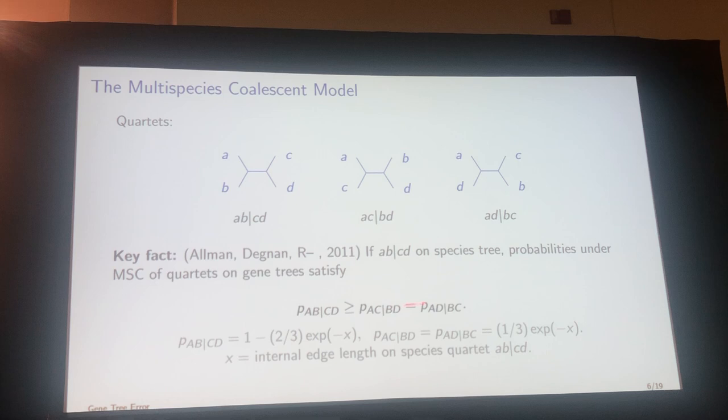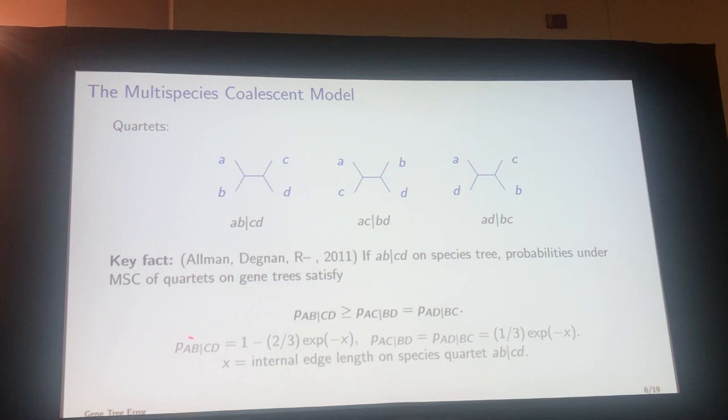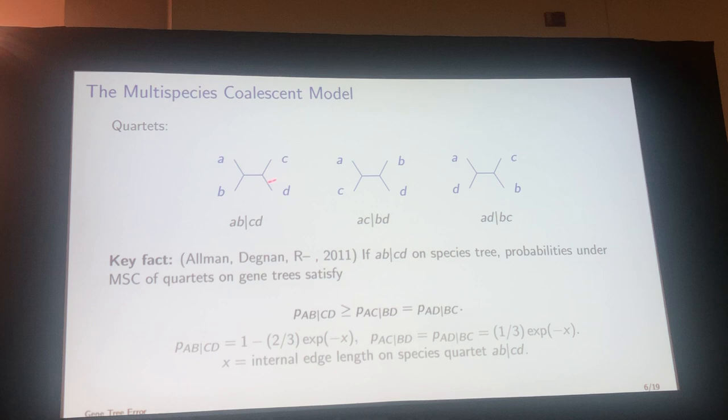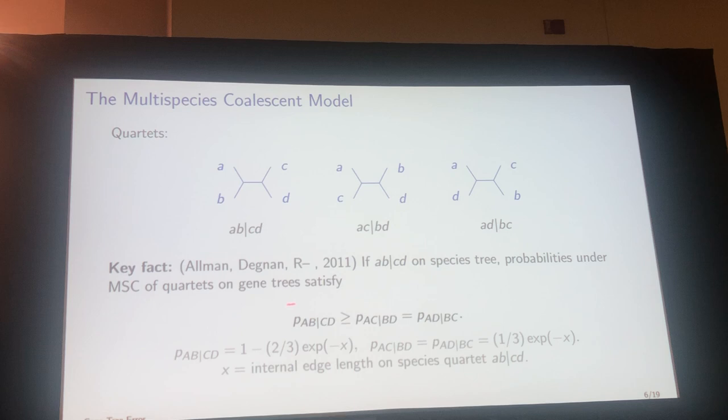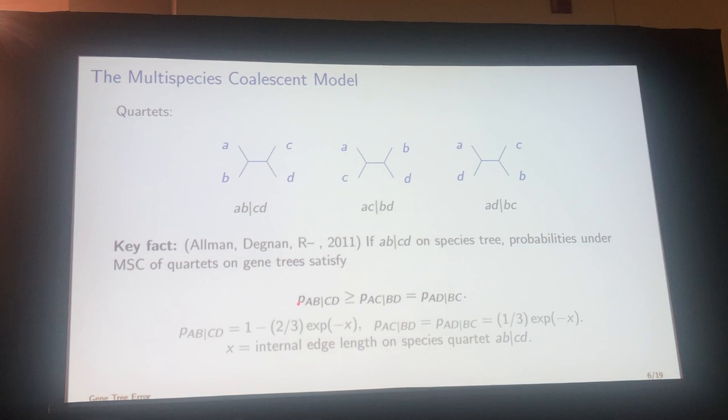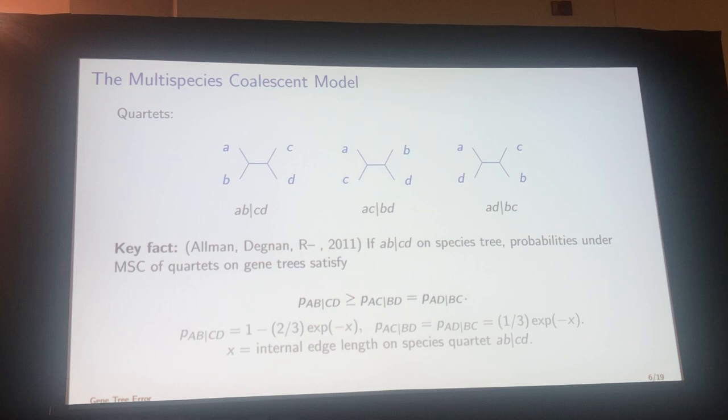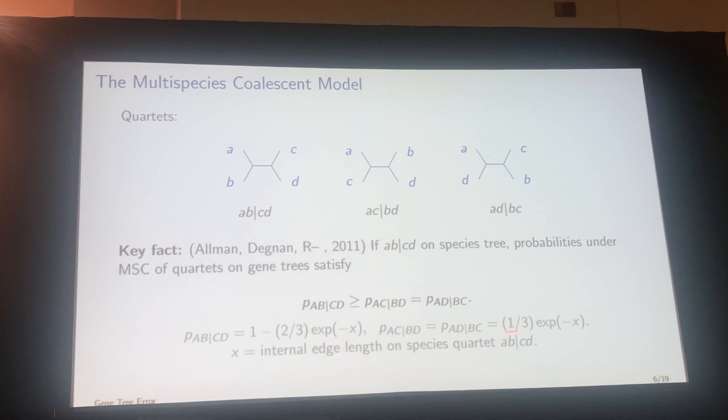Those probabilities depend on the internal edge length of the species tree quartet — that edge length measured in coalescent units — and we can write down exactly what those probabilities are. If the edge length is really long, the matching probability is essentially one, and the gene trees should all match the species tree for that quartet. On the other hand, if the branch length is really short, all three quartet probabilities are going to be about one-third — roughly equal.